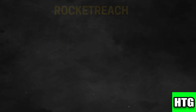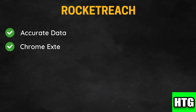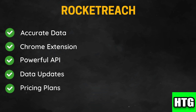Now let's look at RocketReach. RocketReach is known for its highly reliable contact information, enhancing the quality of your outreach efforts. The Chrome extension allows users to find emails and phone numbers directly from LinkedIn profiles, streamlining lead generation. It also offers a robust API for easy integration with other tools and platforms. The platform provides real-time updates on contact information, ensuring your outreach is based on the most current data. It offers a range of pricing plans, making it accessible for teams of all sizes.